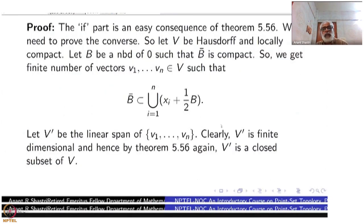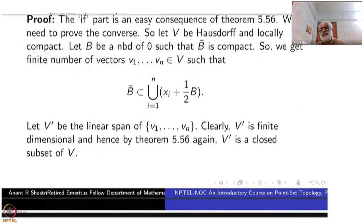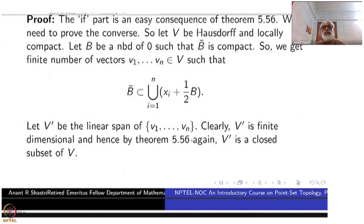Let V' be the linear span of V_1, V_2, ..., V_n. Then V' is finite-dimensional because it is spanned by only n elements. Therefore, by the previous theorem (5.56), V' is a closed subset of V. Here we have used the Hausdorffness of V. So V' is finite-dimensional and closed.